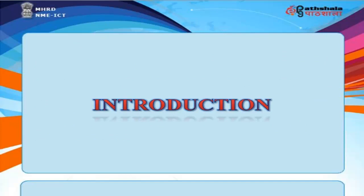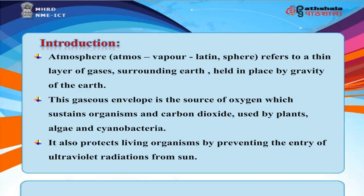Introduction. The atmosphere refers to a thin layer of gases surrounding the Earth, held in place by gravity. This gaseous envelope is the source of oxygen which sustains organisms and carbon dioxide used by plants, algae, and cyanobacteria. It also protects living organisms by preventing the entry of ultraviolet radiations from the sun.